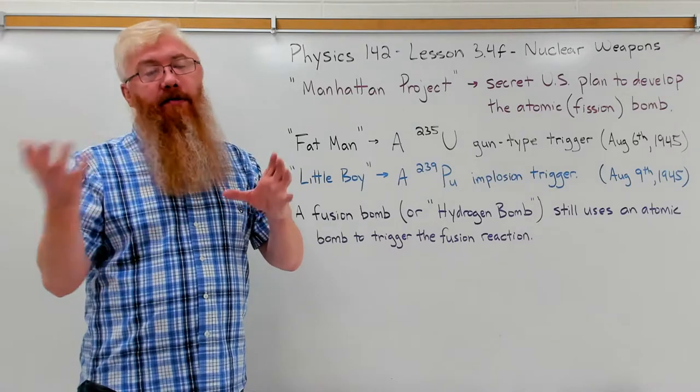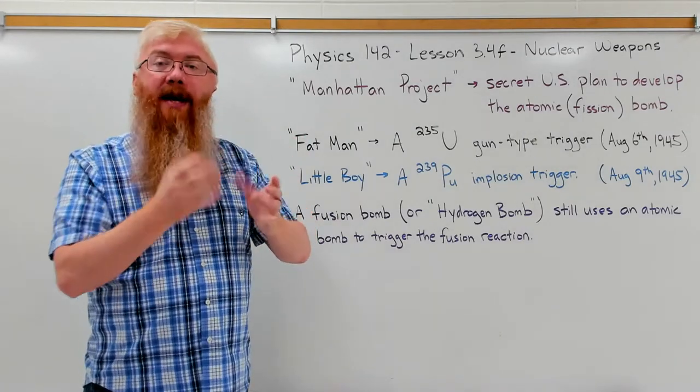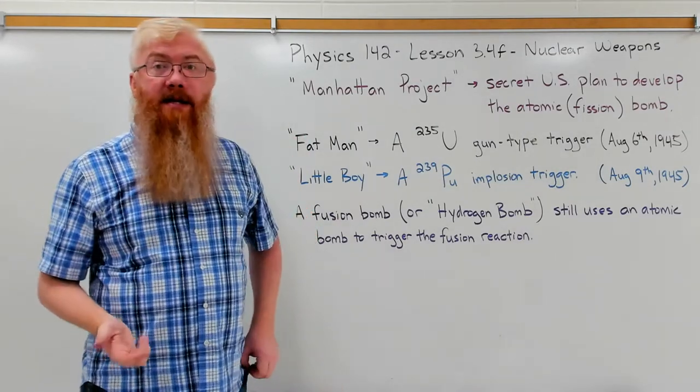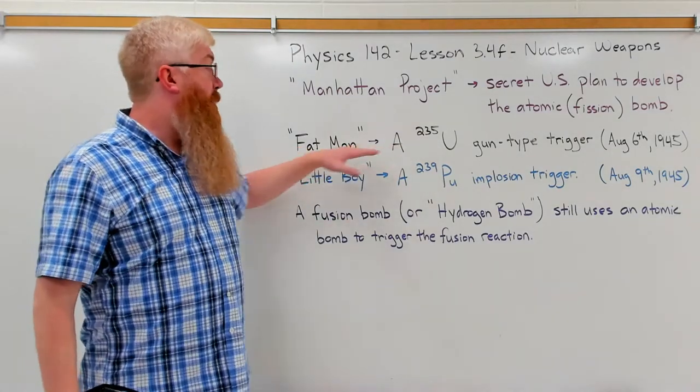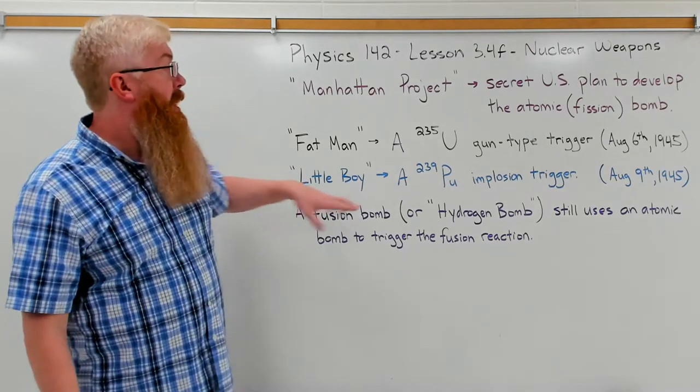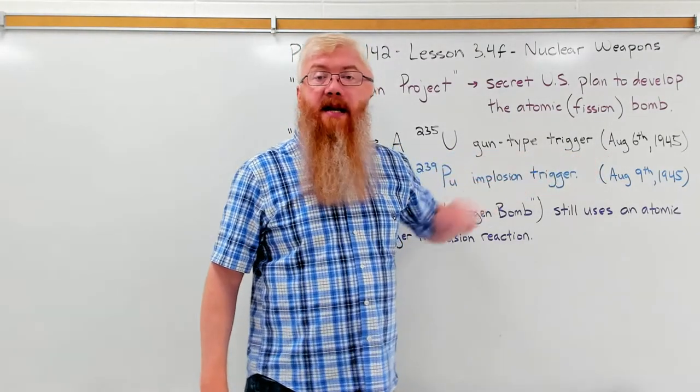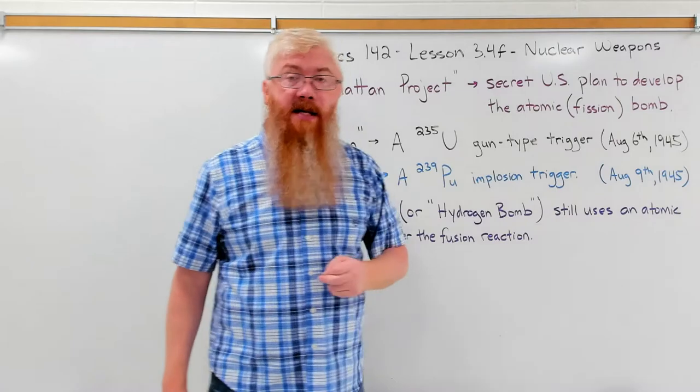Again, enough pure uranium, it wasn't pure, but enough enriched uranium too close together, it basically turns into a bomb on its own. So this was one type of bomb. They called this Fat Man. It was dropped on the Japanese city of Hiroshima on August 6, 1945.